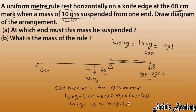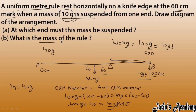Canceling g from both sides and simplifying: 10 × 40 = m × 10, so mass of the rule equals 40 gram. The 10 gram mass must be suspended at the right side of the fulcrum — that is, at the 100 centimeter end, on the right side of the knife edge. That is the answer.